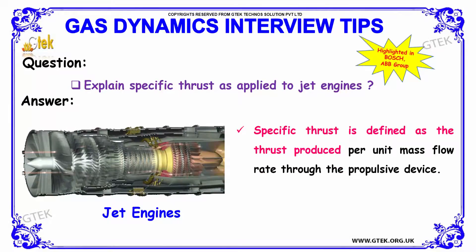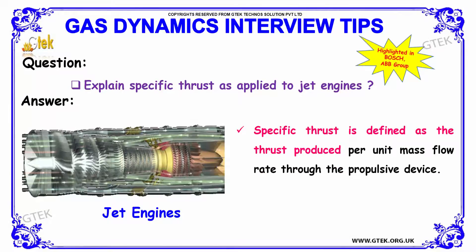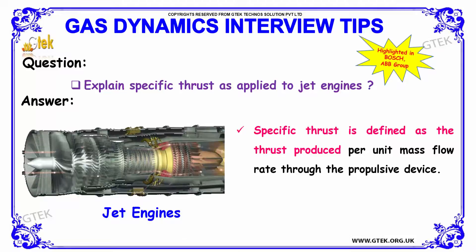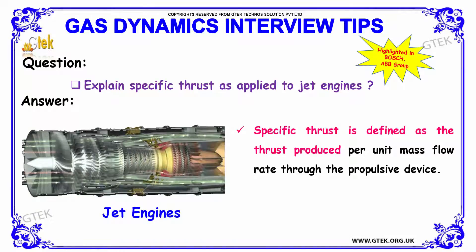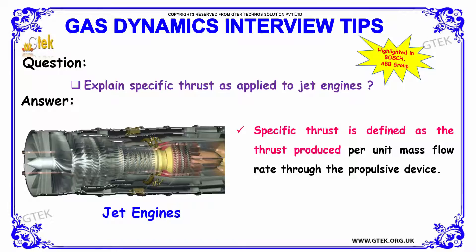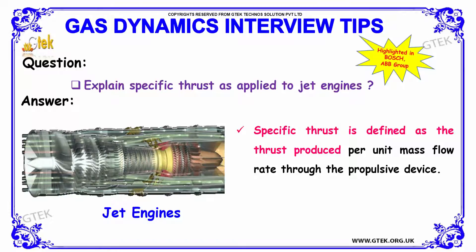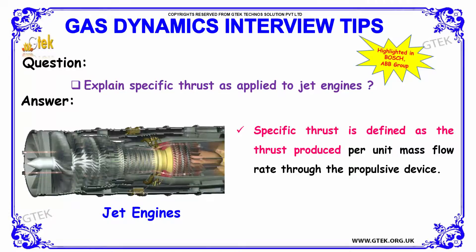Next question: explain specific thrust as applied to jet engines. Specific thrust is defined as the thrust produced per unit mass flow rate through the propulsor device. Here is a jet engine with specific thrust applied to it.